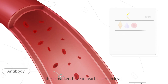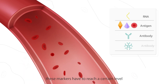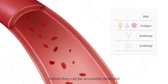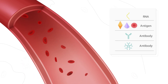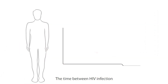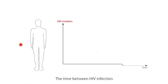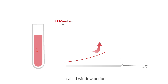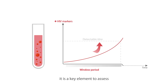However, these markers have to reach a certain level before they can be accurately detected. The time between HIV infection and the detection of these HIV biomarkers is called the window period. For clinical laboratories, it is a key element to assess the performance of the assays.